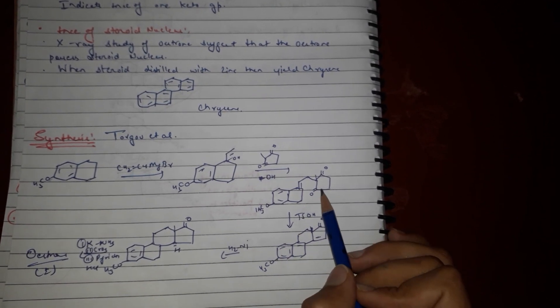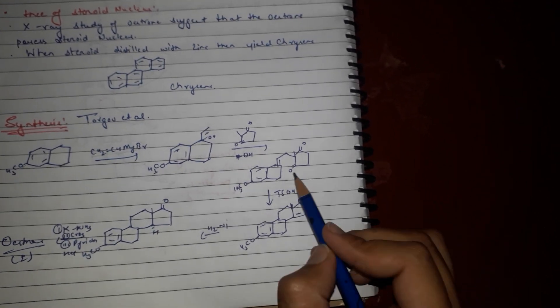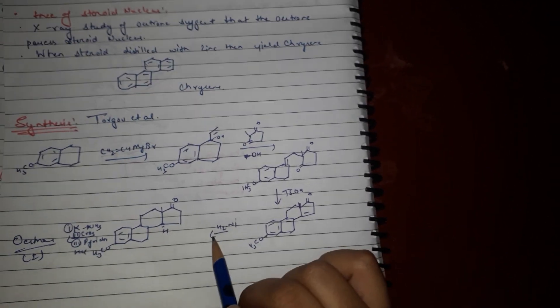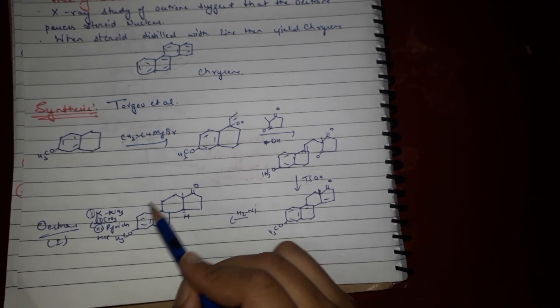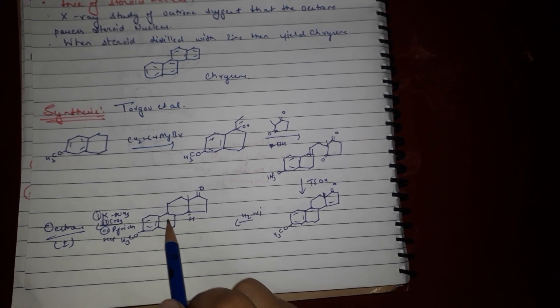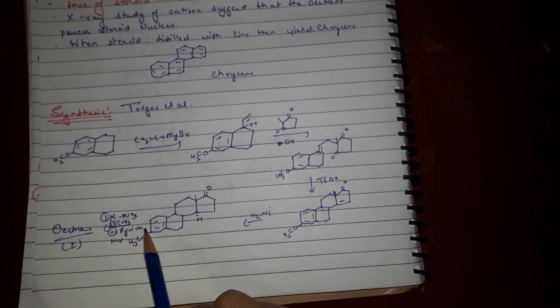On treatment with sulfuric acid it will form bonds here and double bonds. With Nickel catalyst, hydrogenation occurs here and double bonds will be removed from these positions.